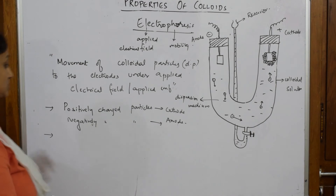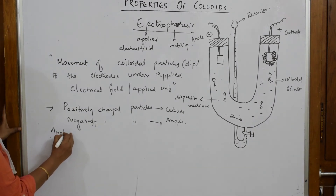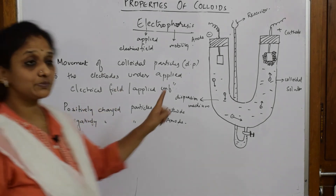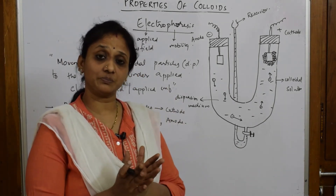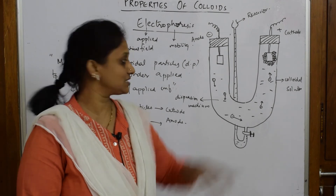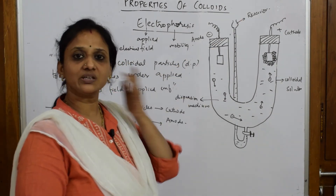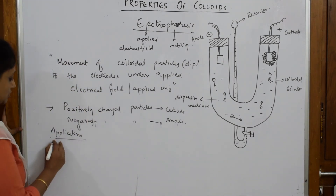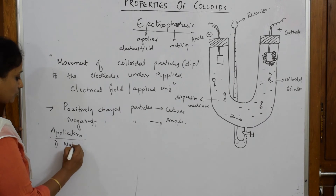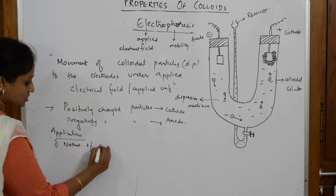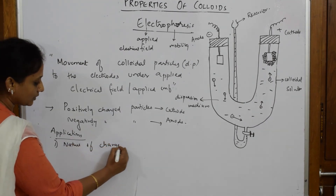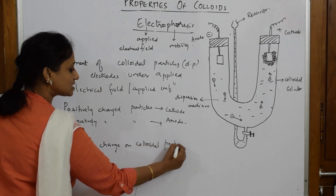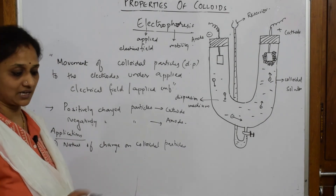What is the use of electrophoresis? When writing the applications of electrophoresis: this concept explains the presence of charge on colloidal particles. Because one is moving in this direction and the other is moving in the other direction, this concept is used to explain the nature of charge on colloidal particles.